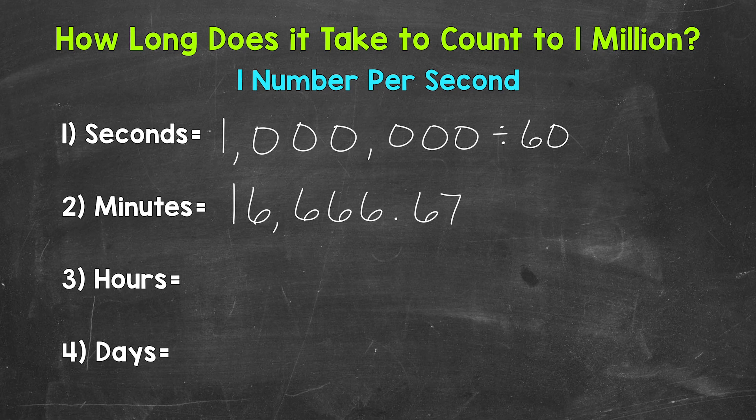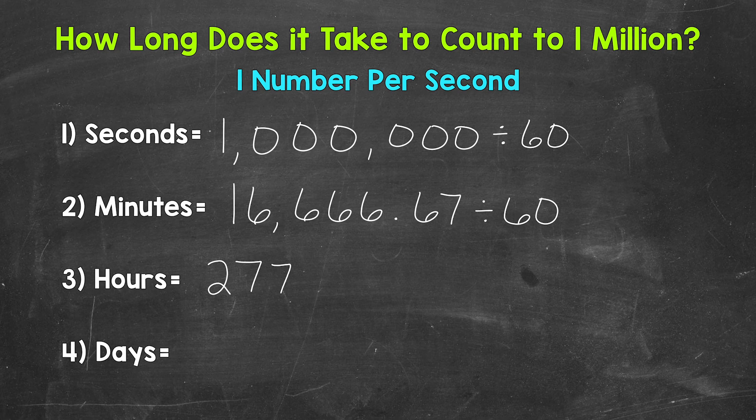Now we can take those minutes and I'm going to use the original decimal, not the rounded decimal, and divide by 60 to get this to hours. That gives us 277 and 78 hundredths. And that was rounded to the hundredths place as well.